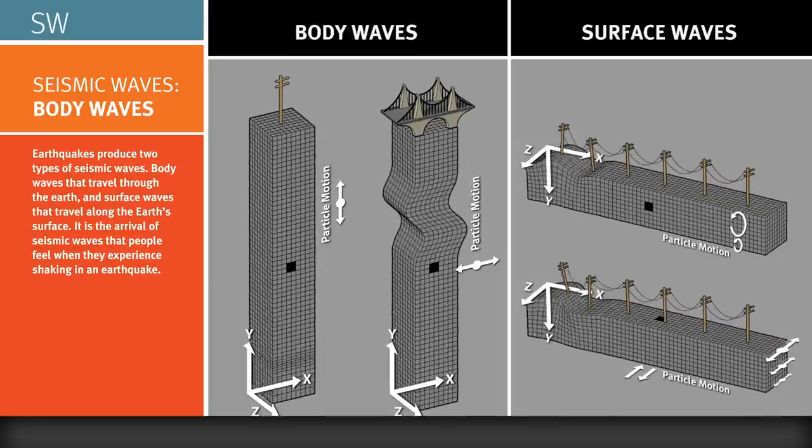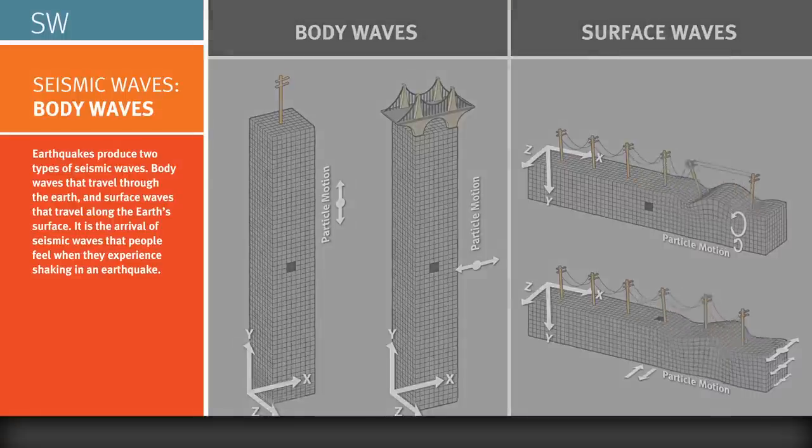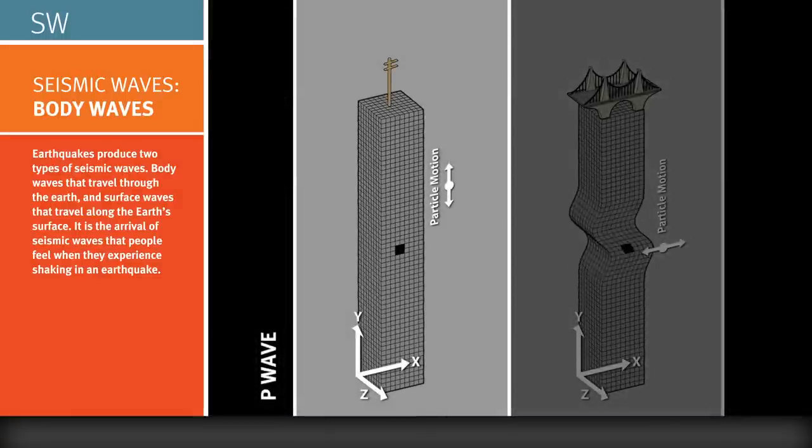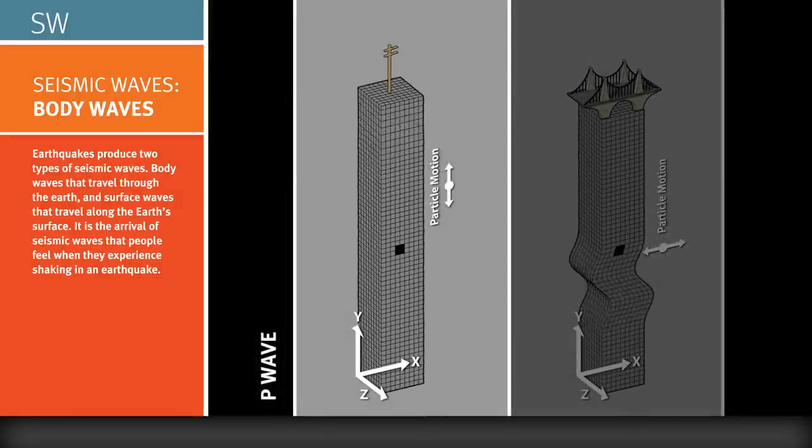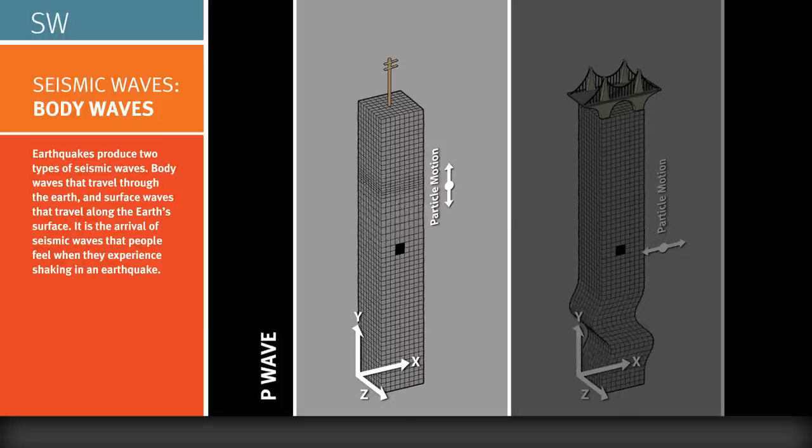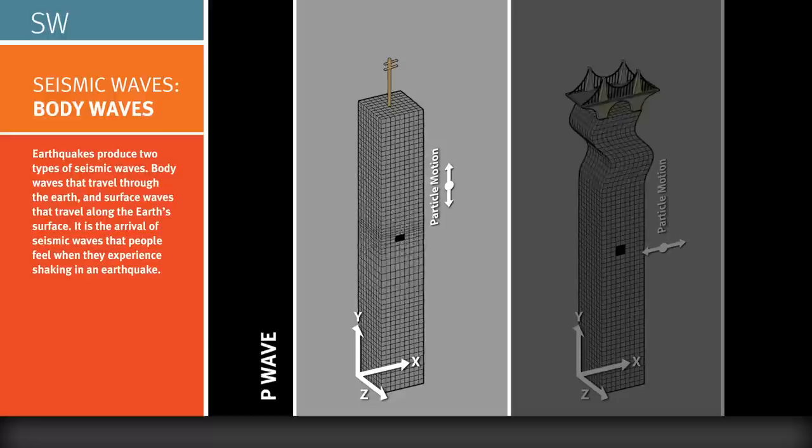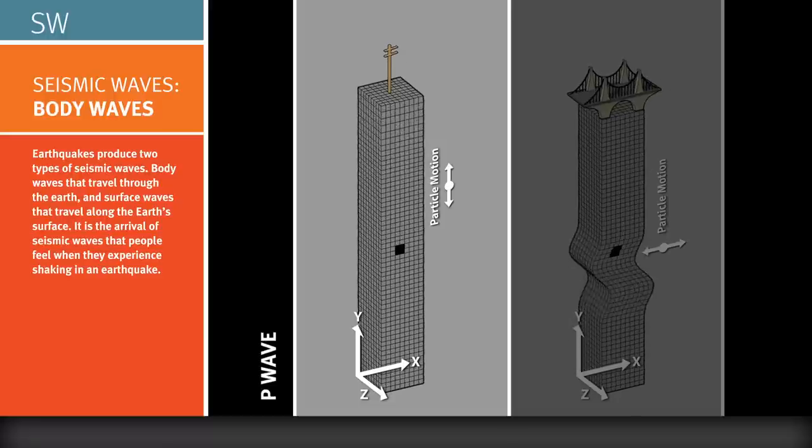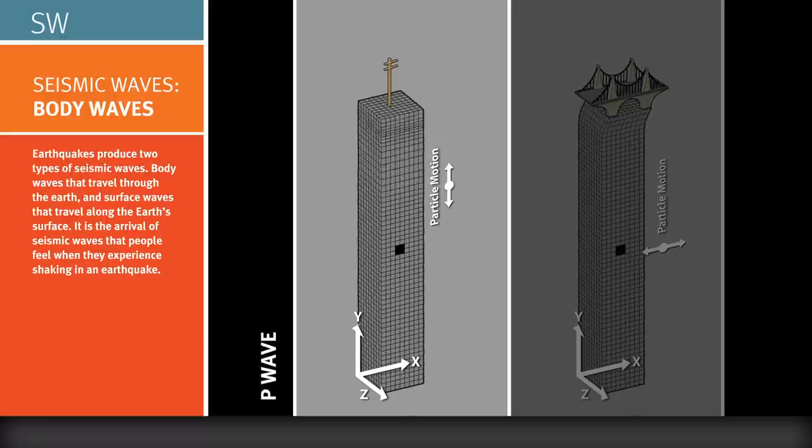Body waves can be broadly classified in two categories. The P wave, or primary wave, is a compressional body wave that alternately compresses and expands the particles that it moves through within the Earth. P waves can pass through any medium, and so travel through every layer of the Earth, and even the air, like sound waves.